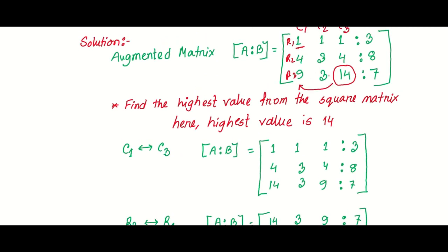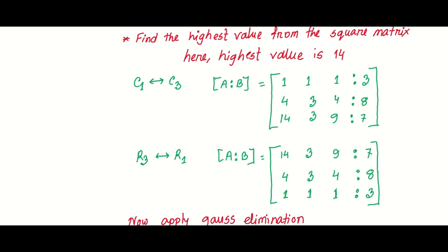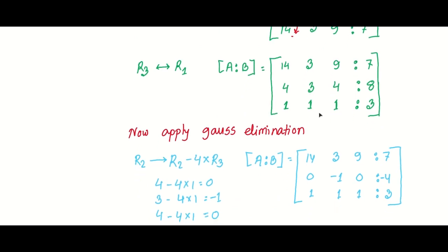By swapping, we move the highest value to the top-leftmost corner. We perform column swap — C1 and C3 are swapped — and then row swap — R1 and R3 are swapped — to bring the pivot element into the correct position.